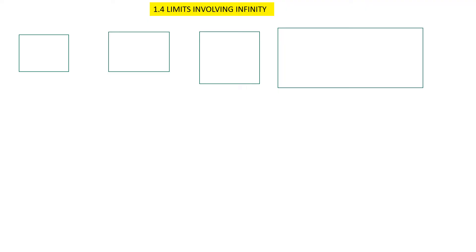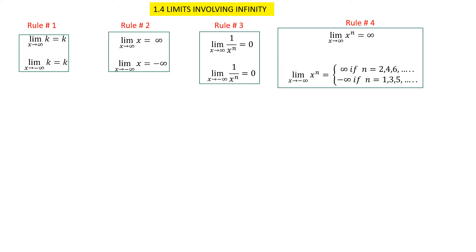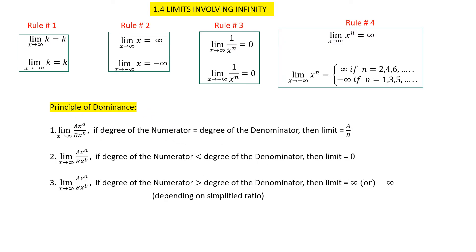Now we discuss limits involving infinity. Sometimes the problem has x approaching infinity or x approaching minus infinity. Using the principle of dominance, case one: if the degree of the numerator equals the degree of the denominator, the limit equals a divided by b, where a is the leading coefficient of the numerator and b is the leading coefficient of the denominator.